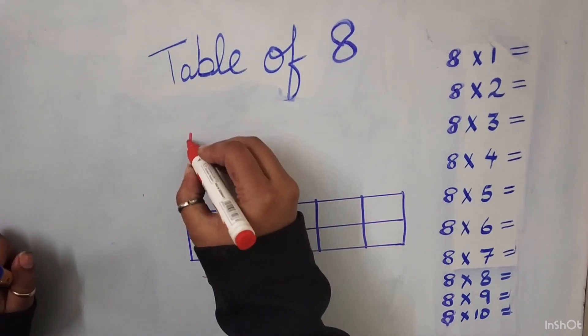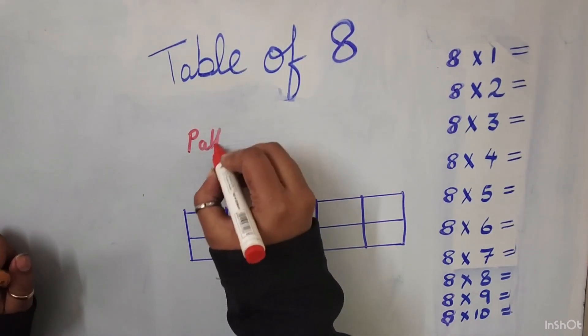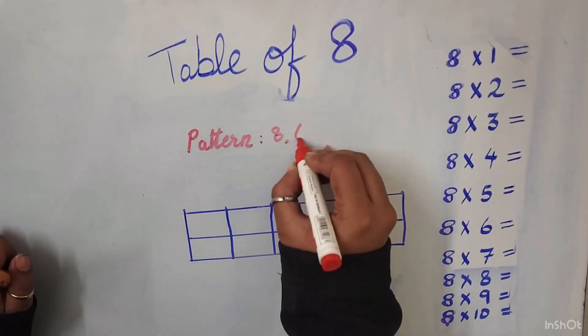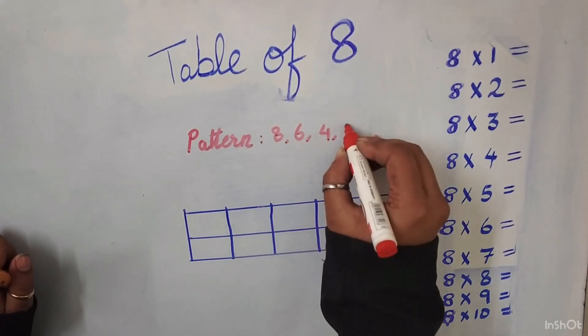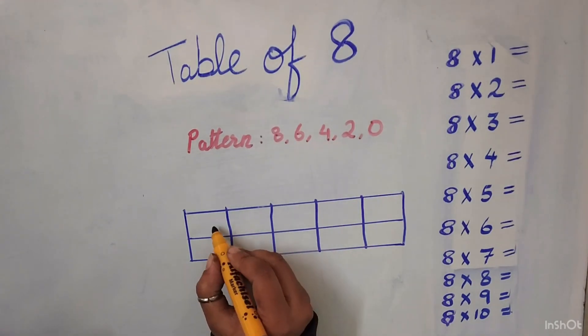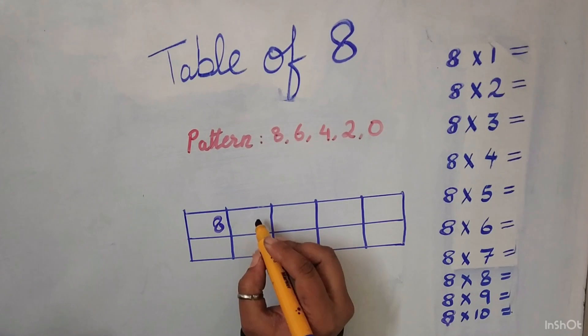For the table of 8, the pattern is similar to the pattern of table of 2 but in the reverse order, that is 8, 6, 4, 2 and 0.